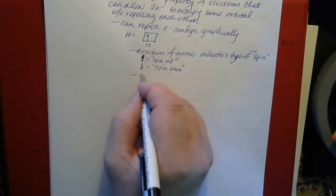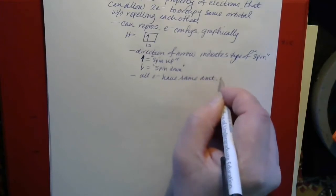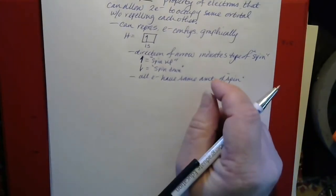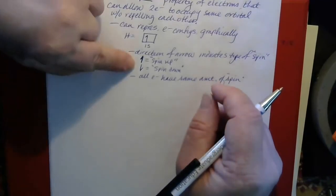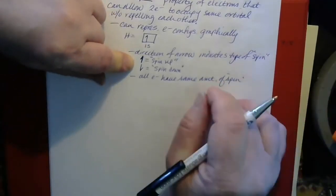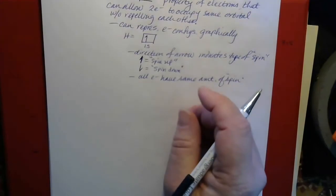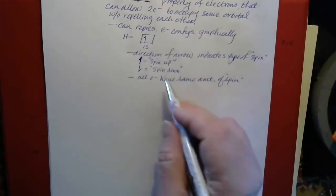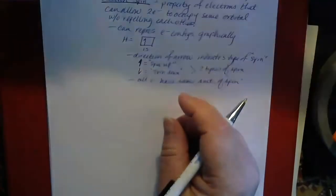All electrons have the same amount of spin — it's just a question of whether it's spin up or spin down. It's kind of like the situation between a proton and electron: they have the same magnitude of charge but they're opposite in sign. A spin-up electron and a spin-down electron both have the same amount of spin, but the up and down cancel each other out so the electrons don't repel each other. There are only two types of spin possible: it's either up or down.